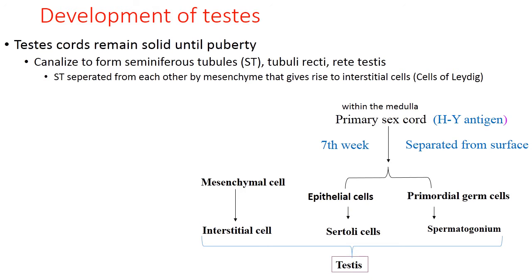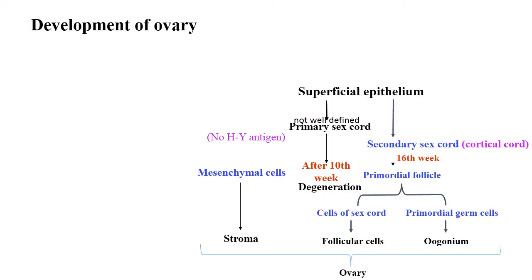Regarding testes development: from the primary sex cords you can distinguish epithelial cells and primordial germ cells located between them. From the epithelial cells develop Sertoli cells (sustentocytes), from the primordial germ cells develop spermatogonia, and mesenchymal cells give rise to interstitial cells. Together they form the testes.